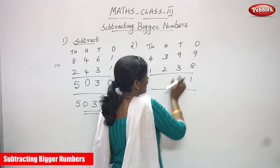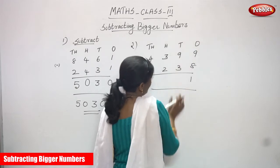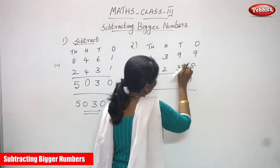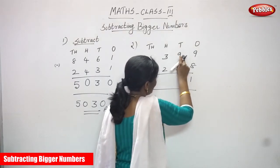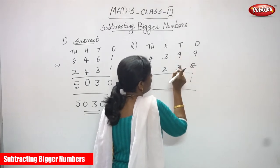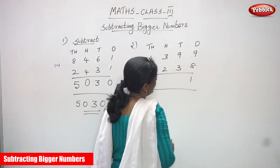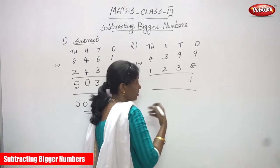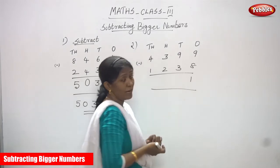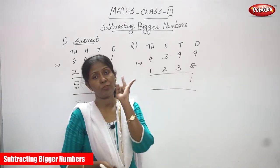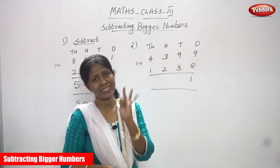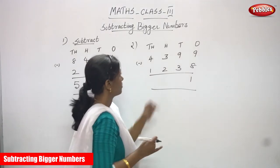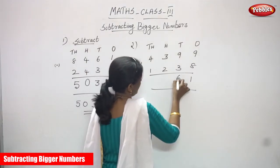Now I'm going to subtract with the 10s place value. What are the numbers in the 10s place? 9 and 3. 9 is a bigger number and 3 is a smaller number. Start subtracting after 3 using backward counting: 4, 5, 6, 7, 8, 9 — up to 9. That means the answer is 6.